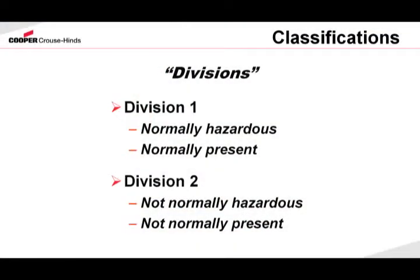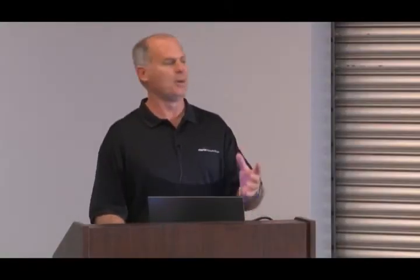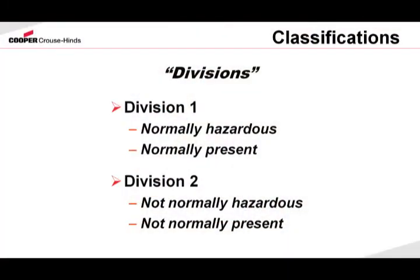We further break down these hazardous locations into divisions. The class was the basic building block. The division tells us whether that flammable gas, vapor, or liquid or combustible dust is present under Division 1 conditions — which means it's normally present — or Division 2, whether it's not normally present. An example: anytime you have a Division 1 boundary around a thief hatch on an oil tank or around a flange on a valve, the area immediately adjacent to that Division 1 area would be automatically classified as Division 2. When we get beyond the Division 2 boundary, we get into non-hazardous locations.